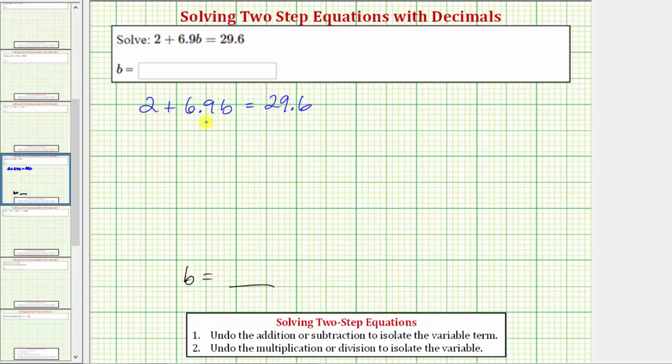And we'll take a look at two methods for solving this equation. For the first method, we'll leave the equation in its current form and isolate b on the left side. And for the second method, we'll begin by clearing the decimals from the equation and then solving for b.